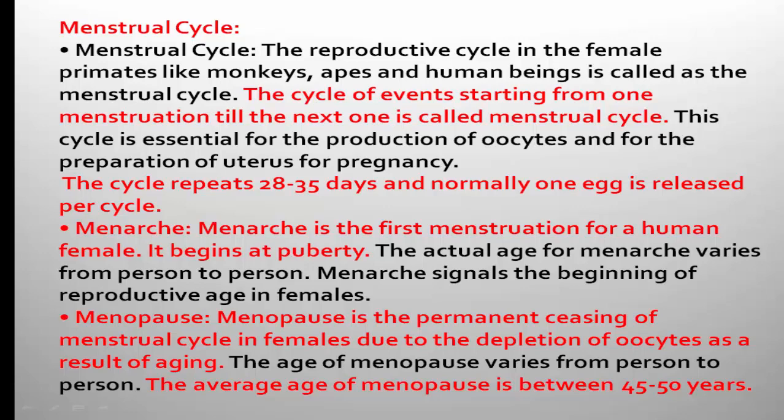The menstrual cycle is a 5-mark question. The menstrual cycle represents the reproductive cycle in female primates like monkeys, apes, and human beings. In non-primates, the reproductive cycle is called the estrus cycle, whereas in primates it is called the menstrual cycle.